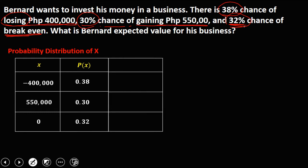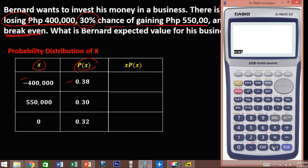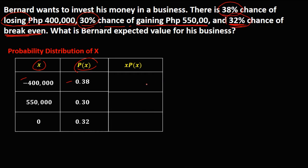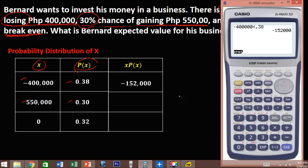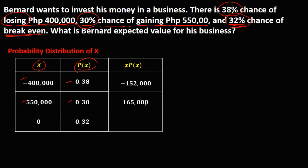To compute the expected value, we first need to compute X times P(X). So we multiply each X by its P(X): negative 400,000 times 0.38 equals negative 152,000. Then 550,000 times 0.30 equals 165,000. And 0 times 0.32 equals 0.